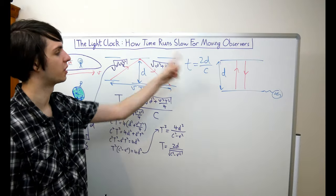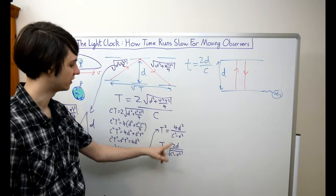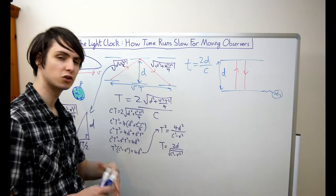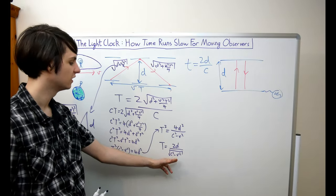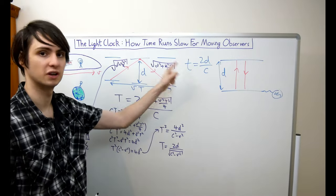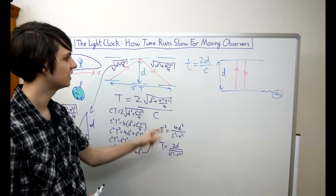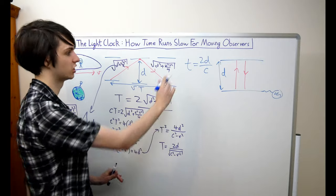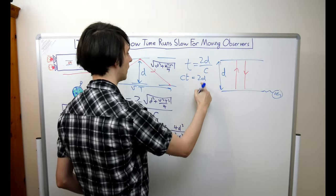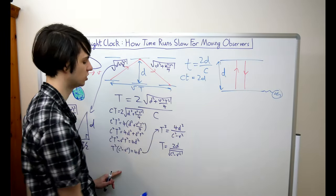It's good to see that this result agrees with our previous one. If the light clock is stationary then the speed v is zero and this expression is just t equals 2d divided by c, which is the same as before. Now you can quite clearly see that for some general speed v this expression for capital T is going to have a different value to the one for little t. We can express capital T in terms of little t to see what the difference is. This expression tells us that c times little t equals 2d, and we can see that 2d appears in our expression for capital T, so we can substitute for 2d.